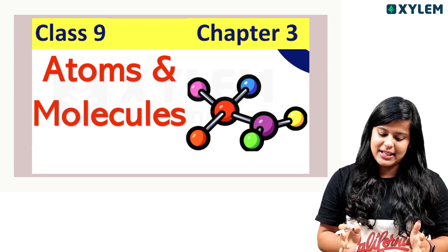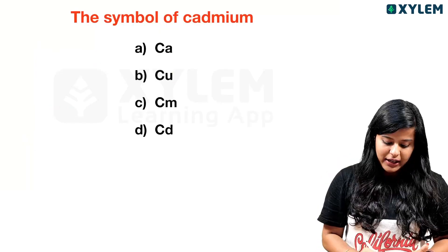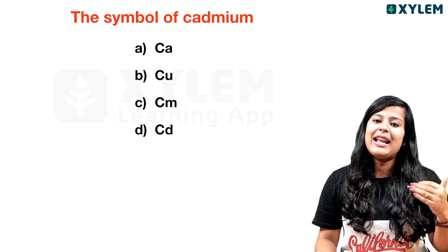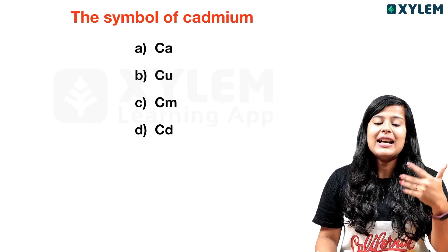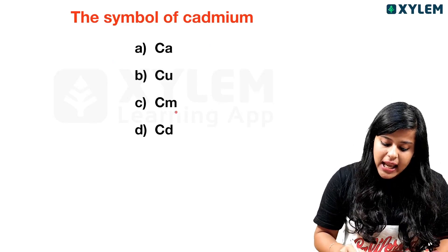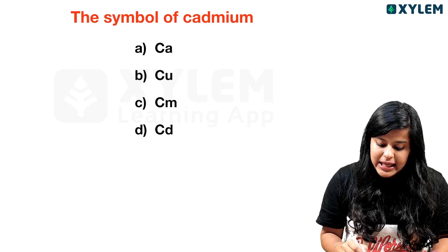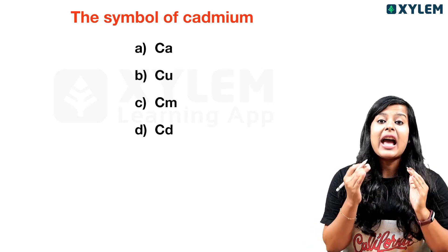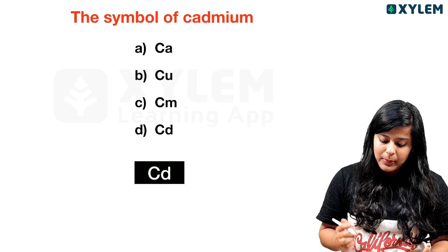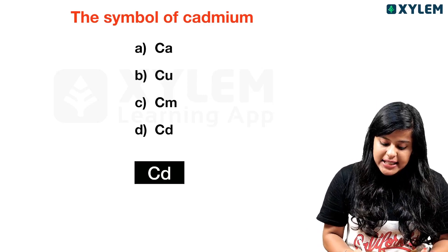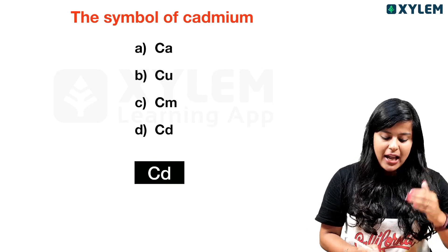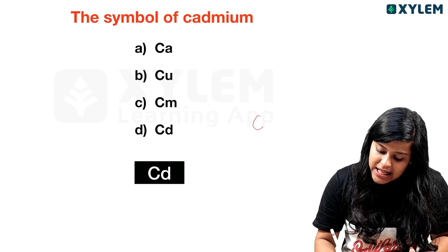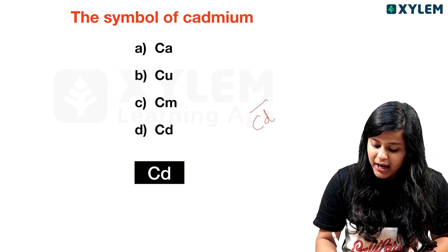The first question is: what is the symbol of cadmium? The options are Ca, Cu, Cm, or Cd. We are going to say the answer is Cd — capital C, small d.